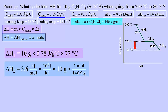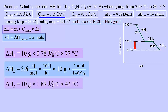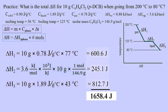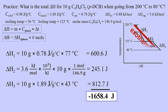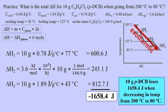For delta H3, we use the specific heat of the liquid and the temperature change given by the graph, which is 43 degrees Celsius. The calculations added together give 1,658.4 joules, but since heat was lost when cooling from 200 to 80°C, the enthalpy change is negative — it is an exothermic process. 10 grams of paradichlorobenzene loses 1,658.4 joules when decreasing in temperature from 200 to 80 degrees Celsius.